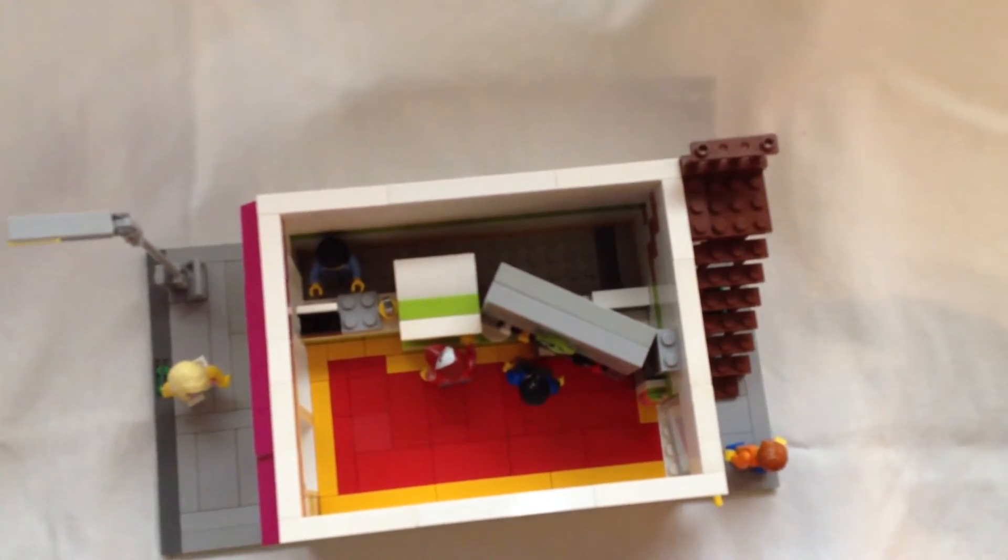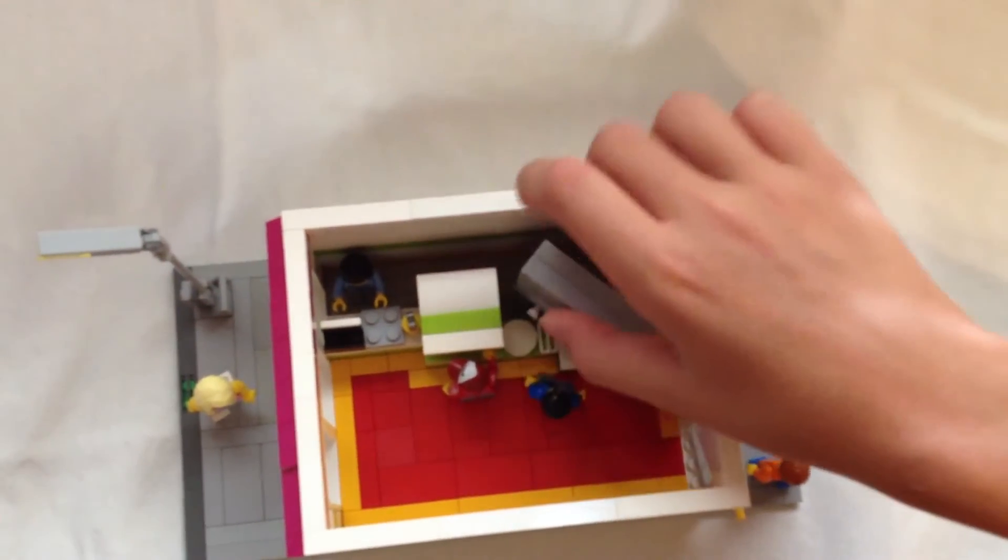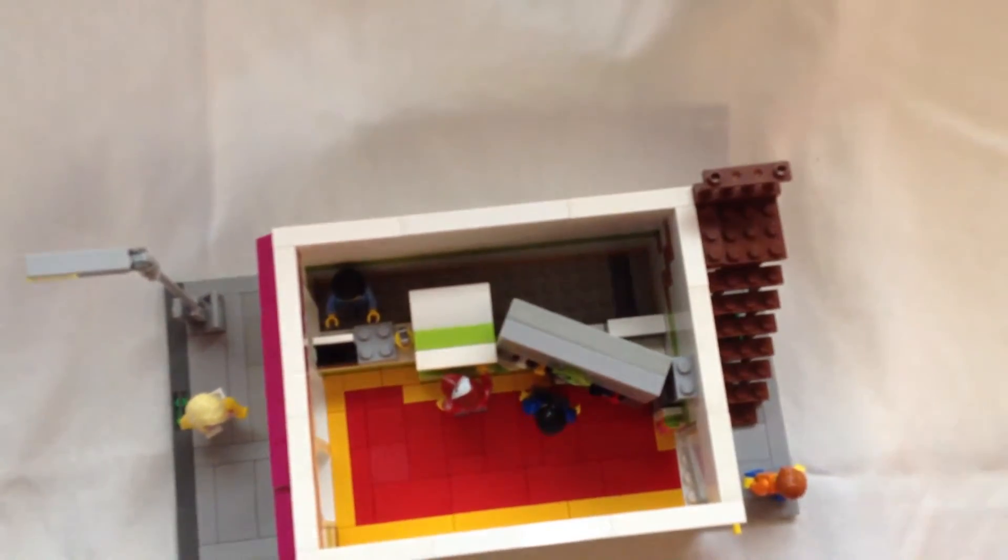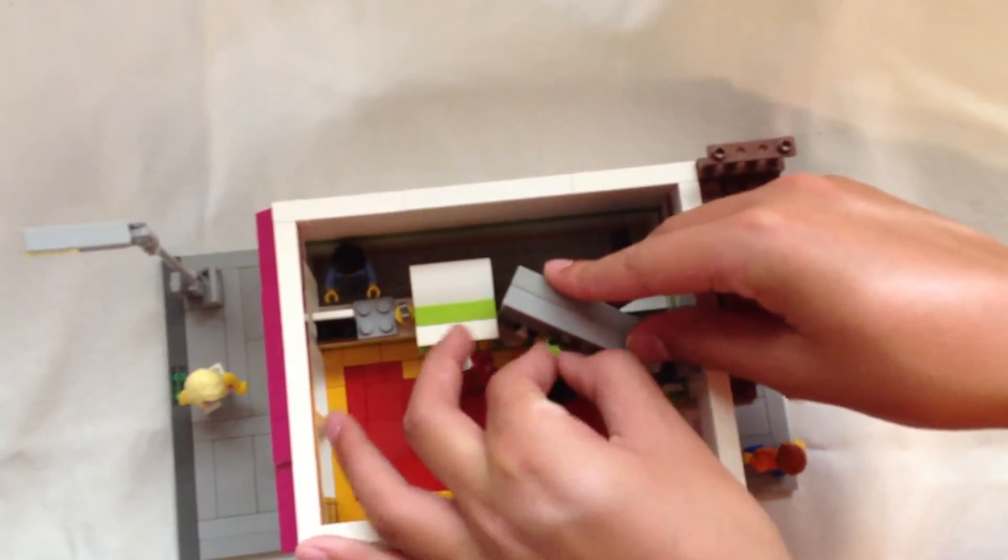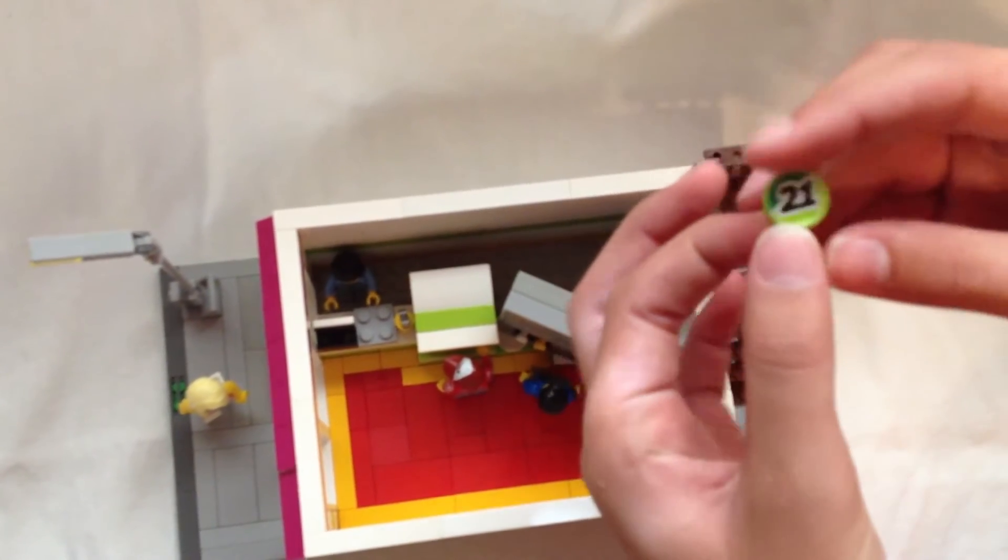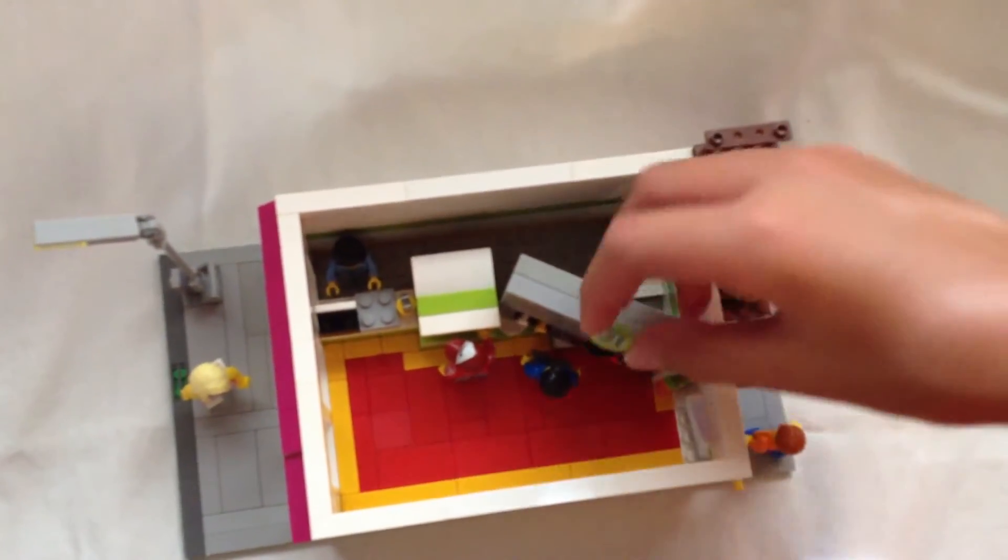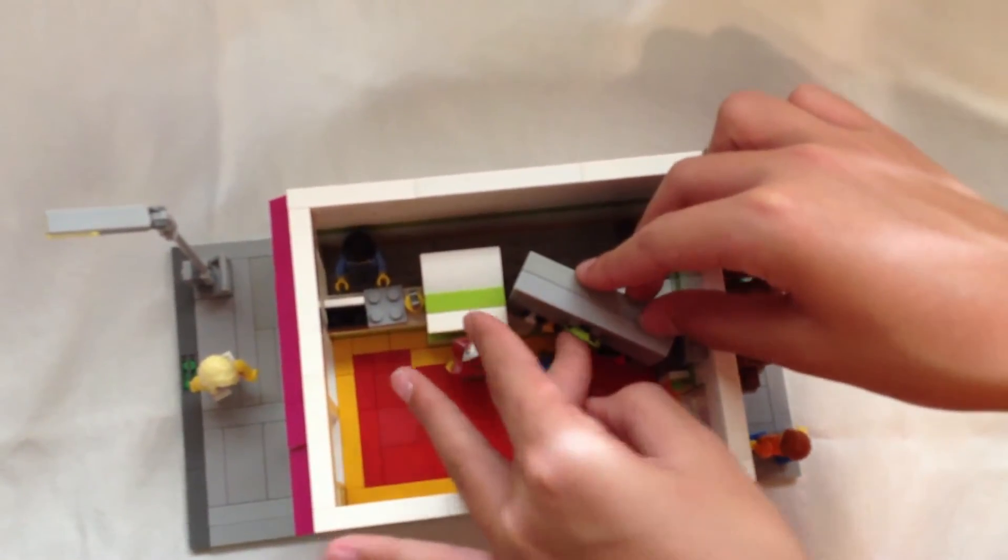So, I made it slanted with a few hinged plates. We have a stickered 2x2 round tile here showing 21 for 21 flavors but only 4 dispensers.